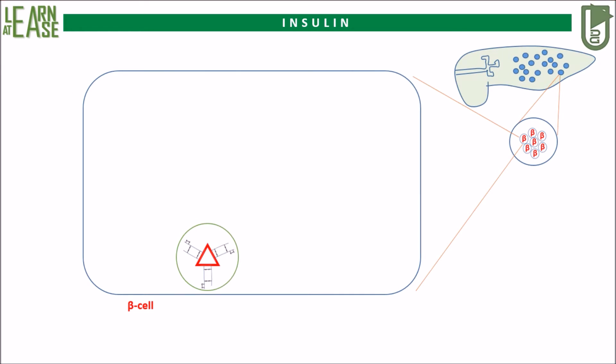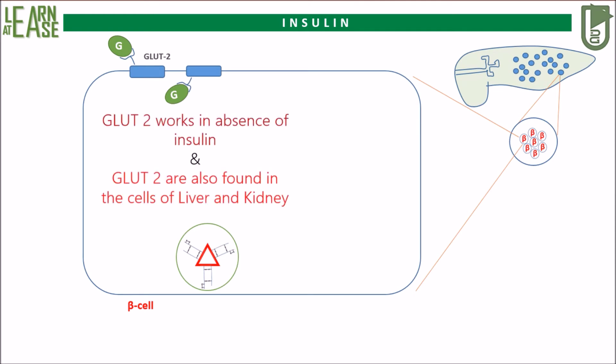When a fasting person eats glucose-rich food, the concentration of glucose in the blood increases. From the blood, glucose will travel to reach the beta cells of the islets of Langerhans. Here, a special type of glucose transporter named GLUT2 will import glucose into the cytoplasm. GLUT2 works in the absence of insulin, and apart from beta cells, it is also found in cells of the liver and kidney.